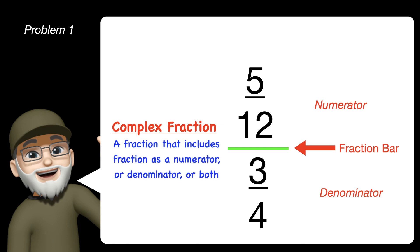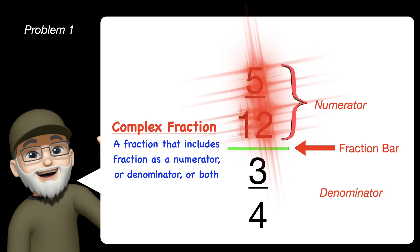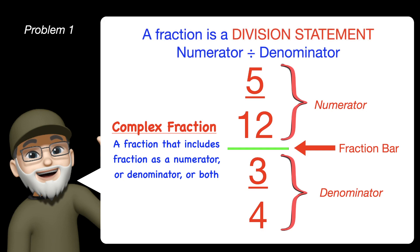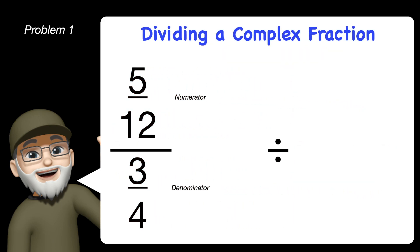A complex fraction is a fraction that includes a fraction as a numerator, in this case the 5 twelfths, or a denominator like 3 fourths, or in this case both numerator and denominator. Remember that a fraction is a division statement, where you divide the numerator by the denominator. So what we're doing today is dividing a complex fraction.